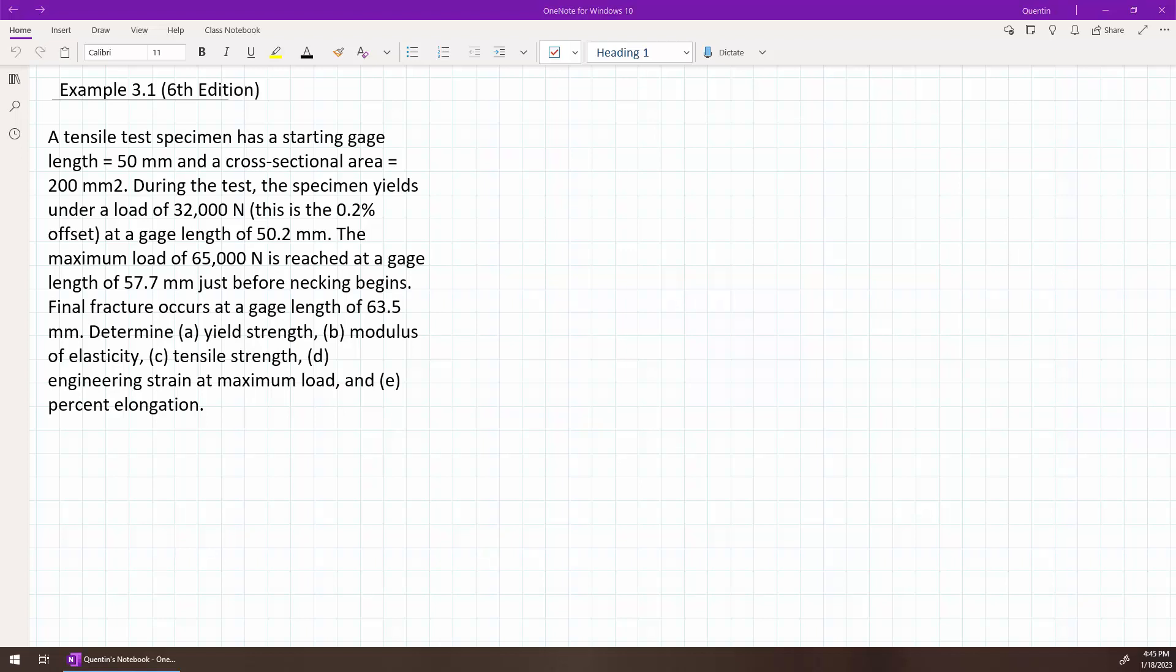Okay, let's look at example 3.1 from the 6th edition. We have a tensile test specimen that has a starting gauge length of 50 millimeters and a cross-sectional area of 200 millimeters squared.